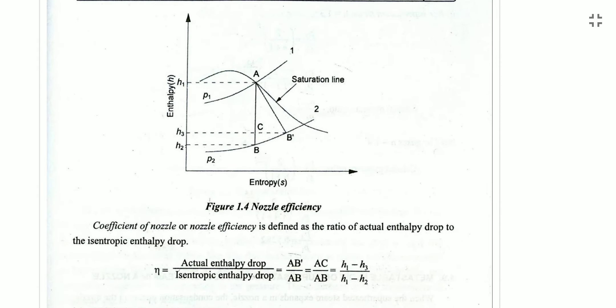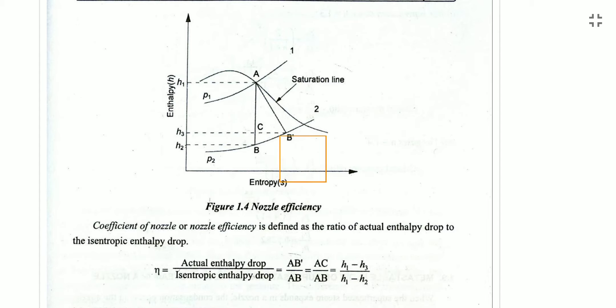For nozzle efficiency, we use the H–S (enthalpy–entropy) diagram. The nozzle inlet is at point A. For isentropic flow, the exit condition is at point B; for actual flow with losses, the exit condition is at point B′. Nozzle efficiency is defined as actual enthalpy drop divided by isentropic enthalpy drop: η = (H1 − H3) / (H1 − H2), where A→B is isentropic and A→B′ is the actual process.